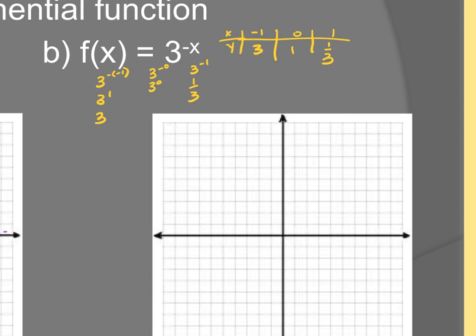Now my asymptote is still at zero, but it's decreasing. The left side is up, the right side is flattening out.